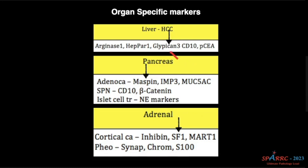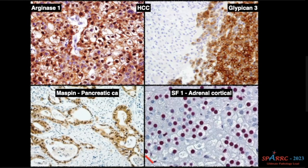For liver, Glypican-3 is a marker for malignant hepatocytes. For pancreas, it is mesothelin; and for adrenal, it is steroidogenic factor 1. For pheochromocytoma, we used to do synaptophysin and chromogranin for the neuroendocrine cells and S100 for the sustentacular cells, but please know that GATA-3 is now positive in pheochromocytoma. The background benign hepatocytes are negative whereas malignant hepatocytes are positive for Glypican-3. This is mesothelin for pancreatic adenocarcinoma, and this is the nice nuclear marker SF-1 for adrenocortical tumor.